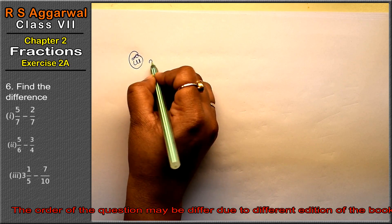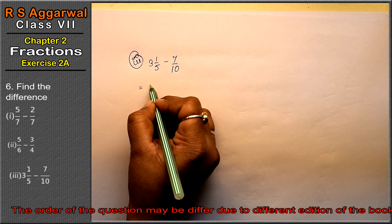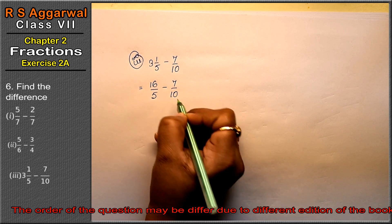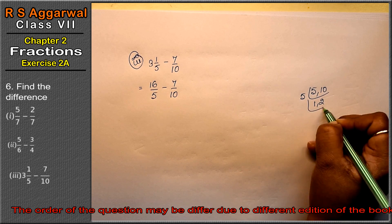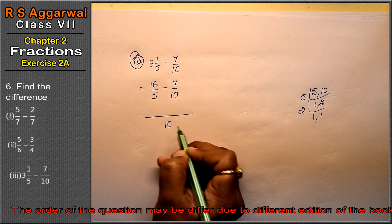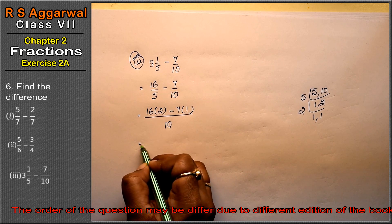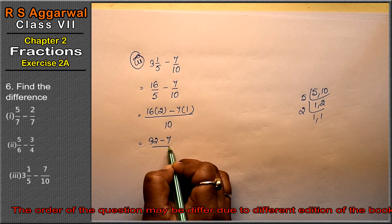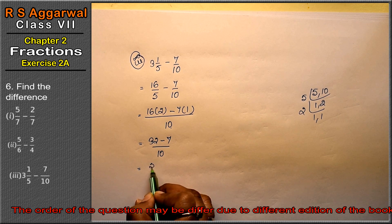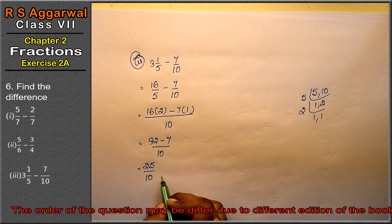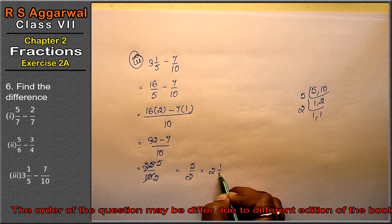Let's do the third part. Third part is 3 and 1 upon 5 minus 7 upon 10. First, we convert the mixed fraction: 5 threes are 15, plus 1 gives 16 upon 5, minus 7 upon 10. Now we take LCM of 5 and 10, which is 10. So 16 multiplied by 2 is 32, minus 7, upon 10. That gives 25 upon 10. Simplifying: 5 upon 2, or we can say 2 and 1 upon 2 is the answer.